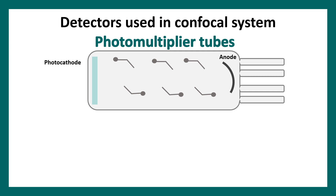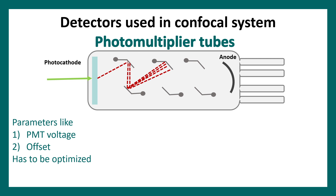One popular detector in confocal systems is the photomultiplier tube (PMT). It works on the photoelectric effect: an incoming photon hits the photocathode, ejecting an electron that strikes a dynode array, producing secondary electrons. These secondary electrons are amplified as they bounce through the dynode array, providing the photo-multiplication function. This allows detection of even faint fluorescent signals in laser scanning confocal microscope systems.